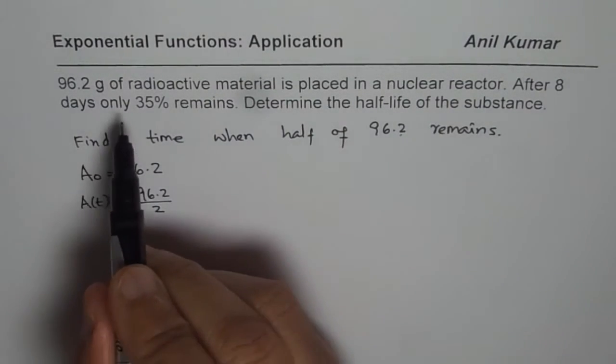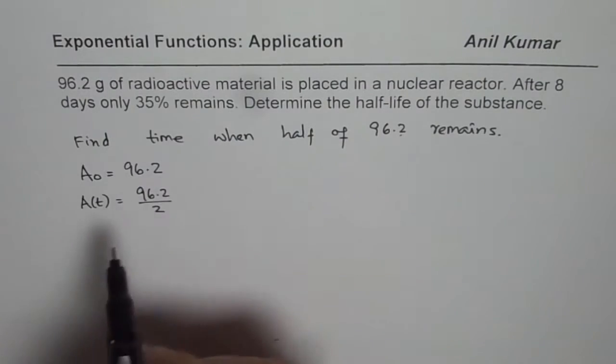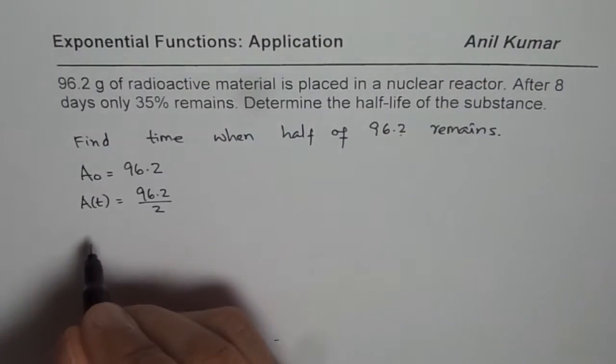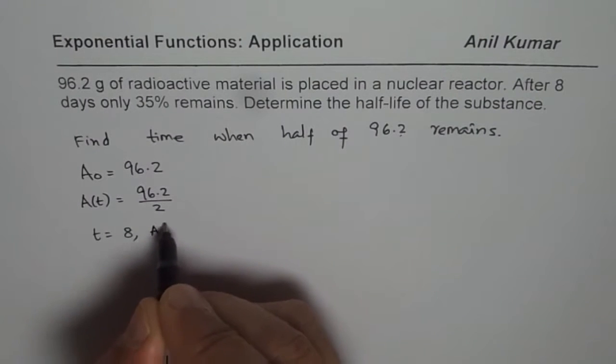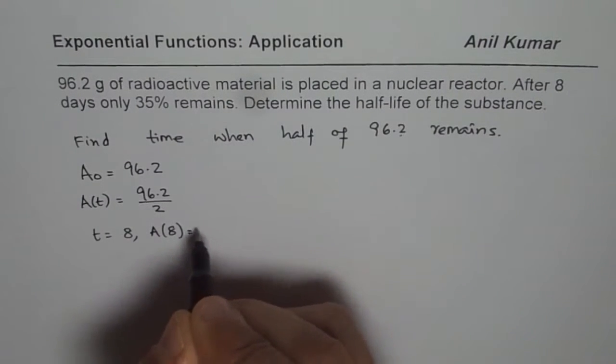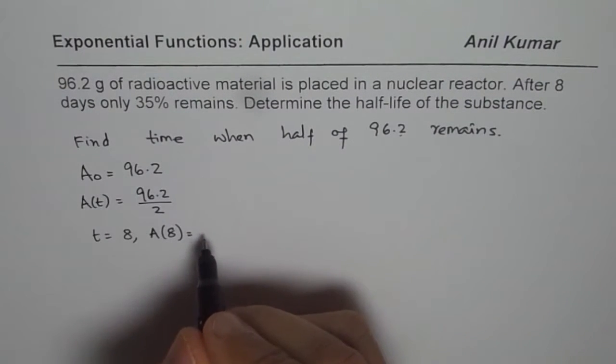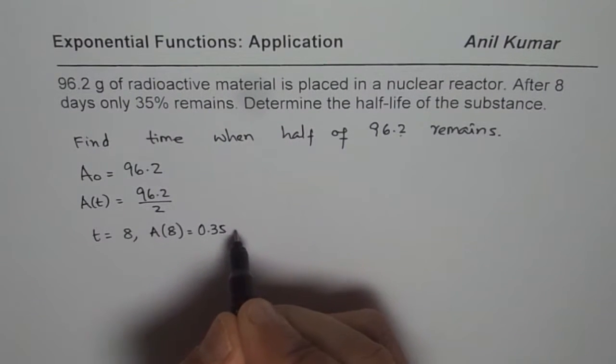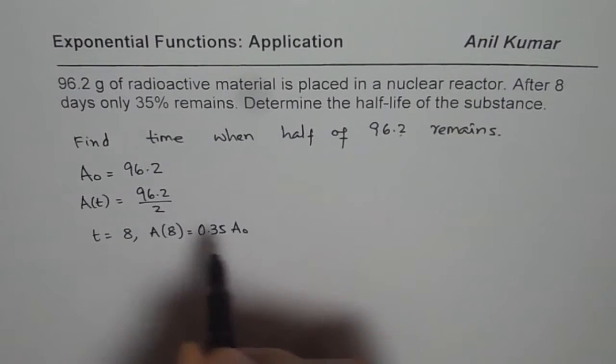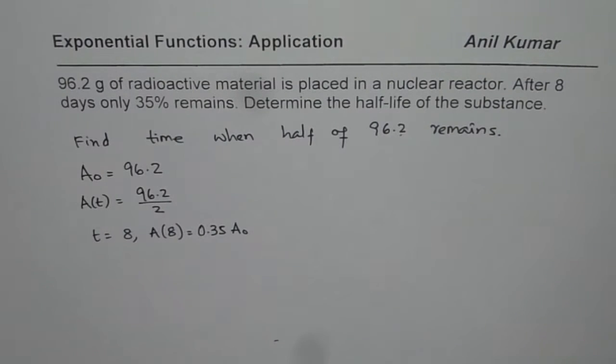After 8 days, only 35% remains. Now we are also given that when t equals to 8, A of 8 is 35% of original. That means 0.35 of A0. So that is what is given to us.